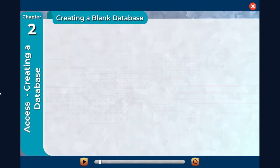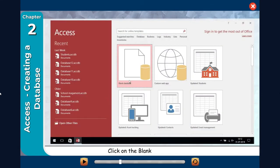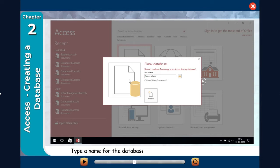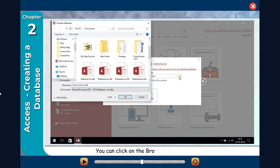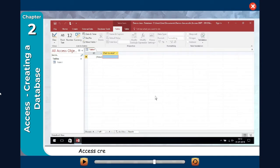Creating a blank database. You can create a new database and fill data in it. Access prompts you to assign a name to the file when you create a new database file. Click on the Blank Desktop Database. A window will appear displaying the information about the blank template. Type a name for the database — 'Dance Class' — in the file name field. You can click on the Browse button to find the folder or drive where you want to store the new file. Click on Create. Access creates a new blank database and opens a new table.